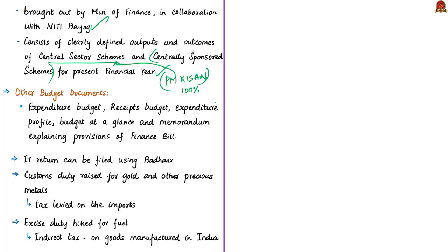All the above-mentioned documents, along with the expenditure budget, receipts budget, expenditure profile, budget at a glance, and the memorandum explaining the provisions of the Finance Bill, are called budget documents. One more important thing to note is that there is no mention of the term 'budget' in the Indian Constitution, but there are three important budget documents that are based on its provisions. Till the end of this financial year, whatever is mentioned in the budget will be discussed in the news again and again.